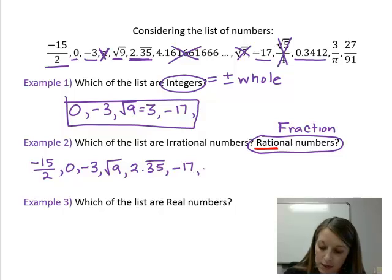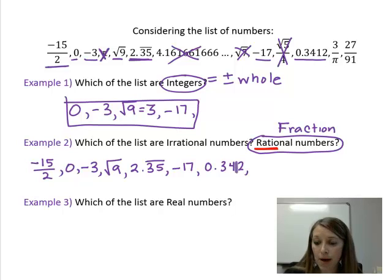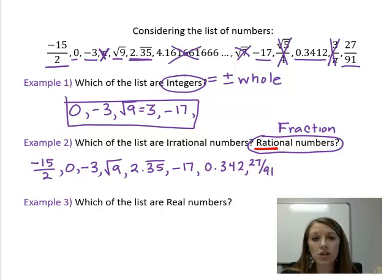0.3412 is a decimal that stops. So it is rational. 3 divided by pi. Half of it is irrational because pi is irrational. That makes the whole part of this fraction irrational. 27 over 91. Those are both rational numbers in each part of the fraction. So that means my whole fraction is rational.